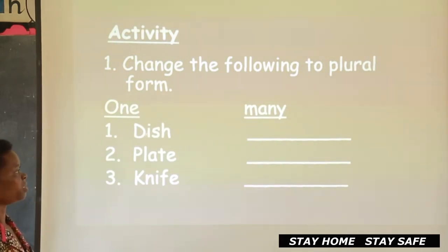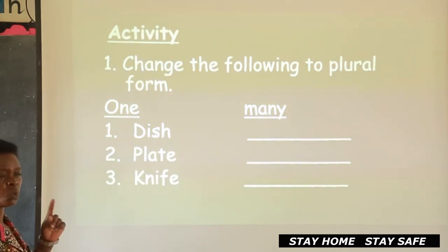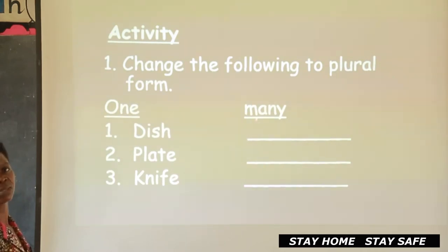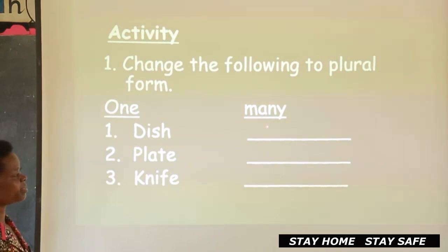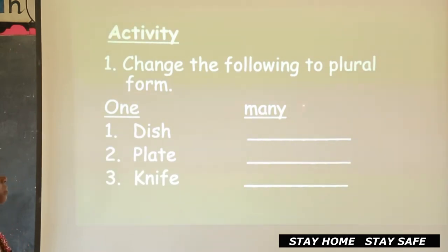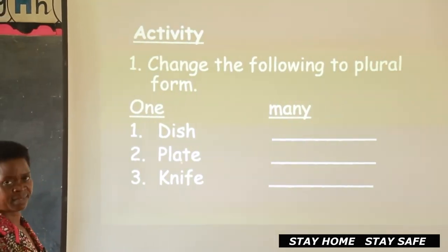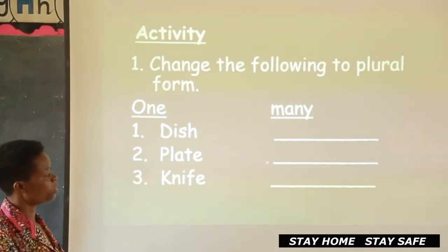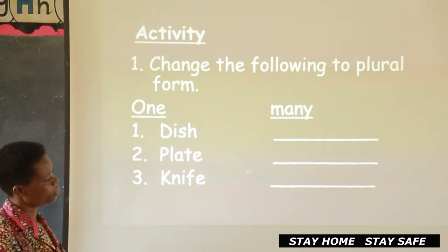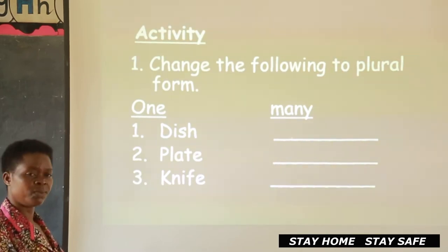Let's read it together: dish. This one is singular — it is one. When you bring it to plural form, what are you supposed to add? You write dish and put 'es', so it will be 'dishes'. Then you come to plate. Plate is one, but when you bring it to plural, you write the word plate and just put 'es'.